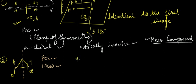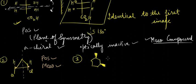In the third example, we have a cyclohexane ring substituted with two groups coming out of the plane. You can see there is a plane of symmetry here — so this compound has a plane of symmetry and is a meso compound.